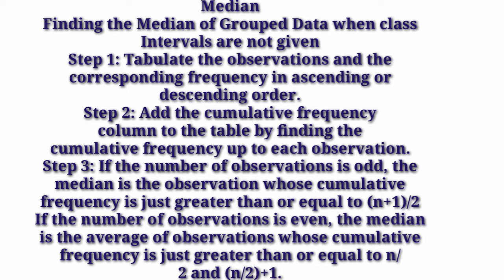Median — finding the median of grouped data when the class intervals are not given. If you have grouped data and class interval is not given, means range is not given — suppose 0 to 5, 5 to 10, 10 to 15, this type of data is not given. First step: tabulate the observation and corresponding frequency in ascending or descending order. You will need to write the observations in increasing or decreasing order along with the frequency.